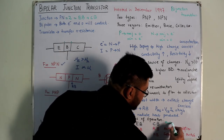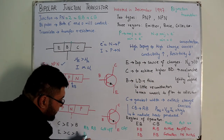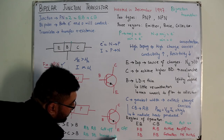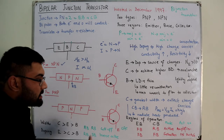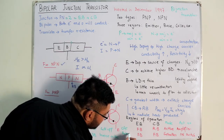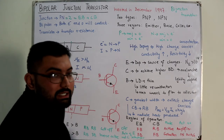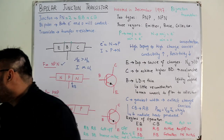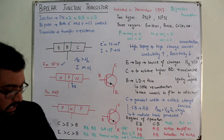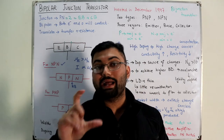In the inverse active mode, the roles of the emitter and collector interchange - the collector plays the role of the emitter and vice versa. This mode is generally not used in practice. The BJT was invented by John Bardeen, Walter Brattain, and William Shockley at the Bell Telephone Laboratories in December 1947.